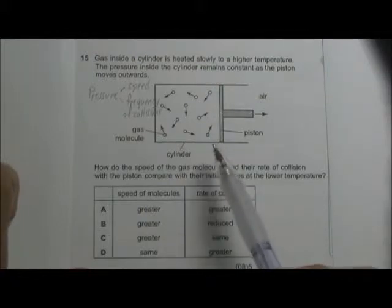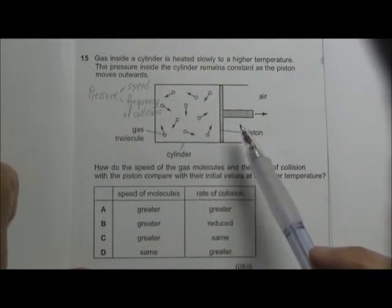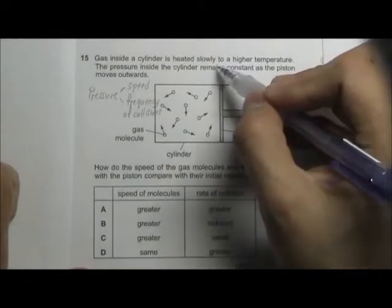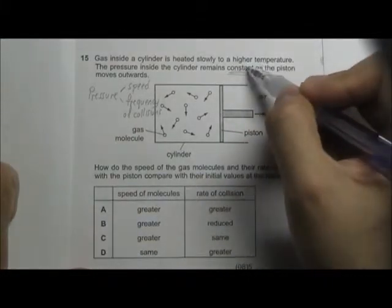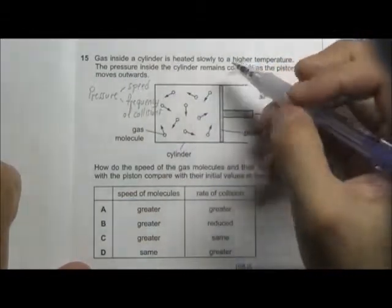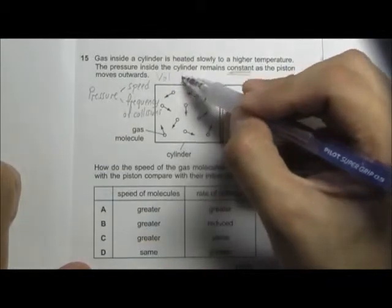So we have some gas in the cylinder that is being heated up slowly to a higher temperature, and the pressure of the cylinder remains constant. This is a keyword. And why is it that it remains constant? Because the piston moves outwards. So when the piston moves outwards, the volume increases.